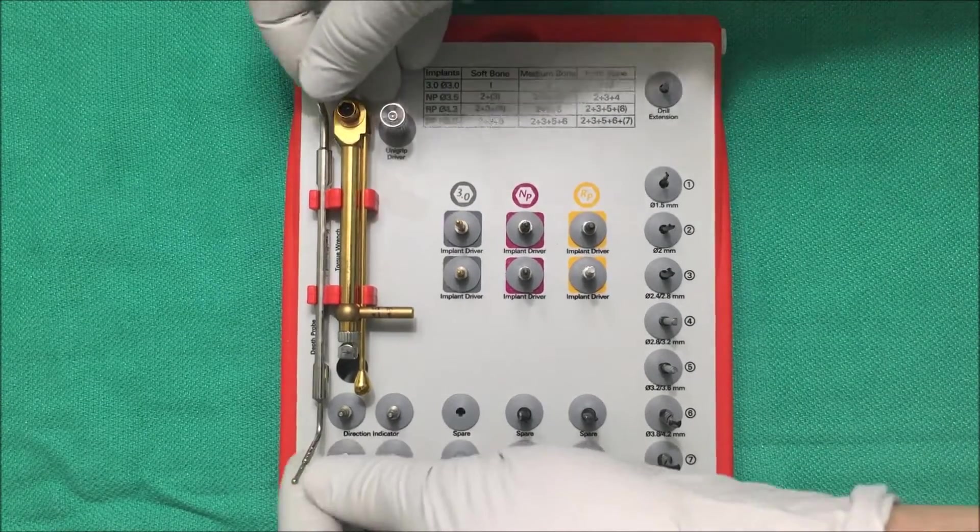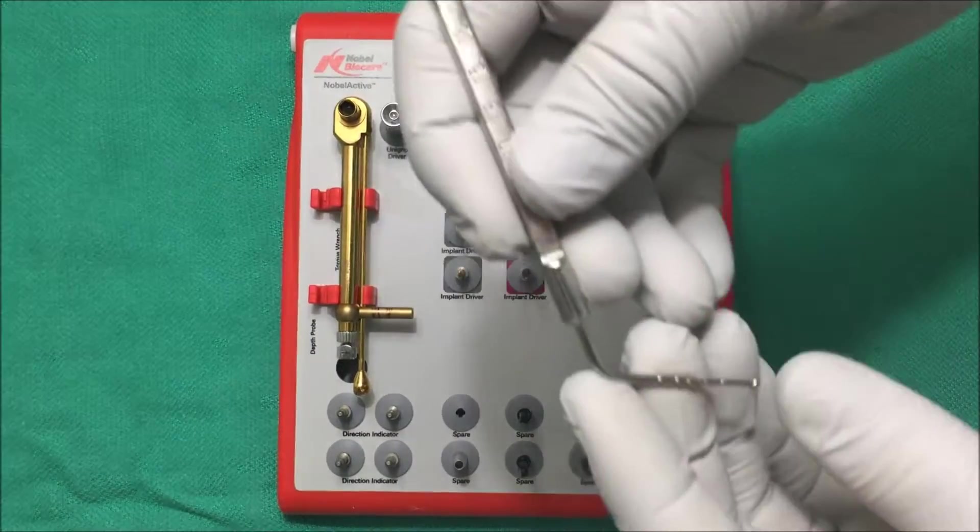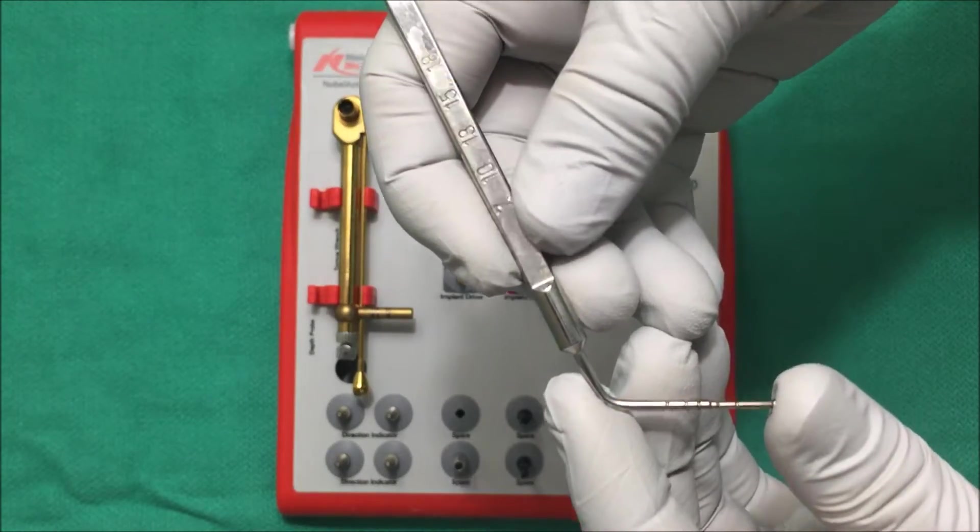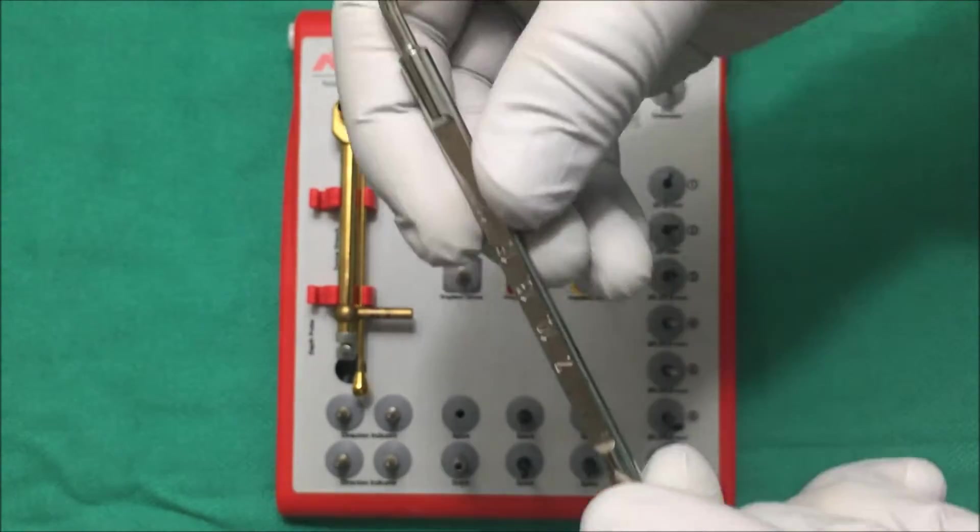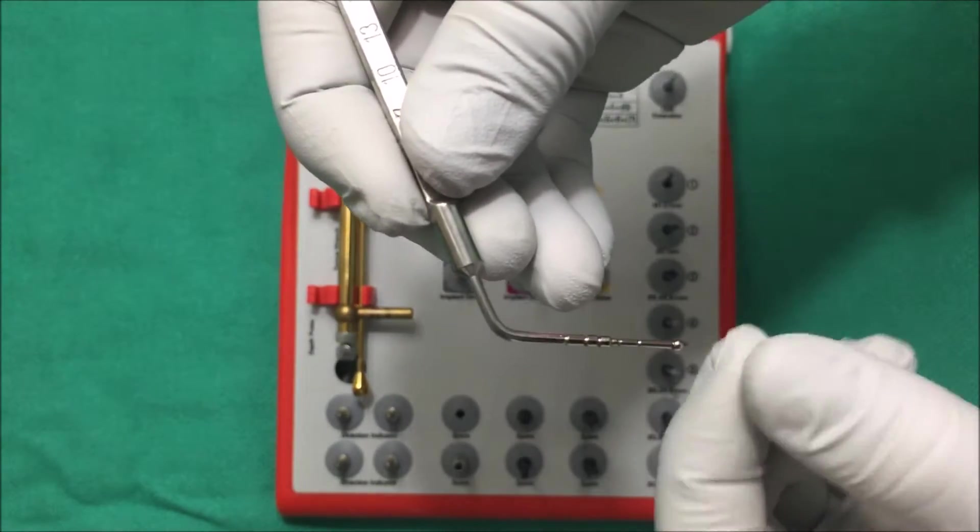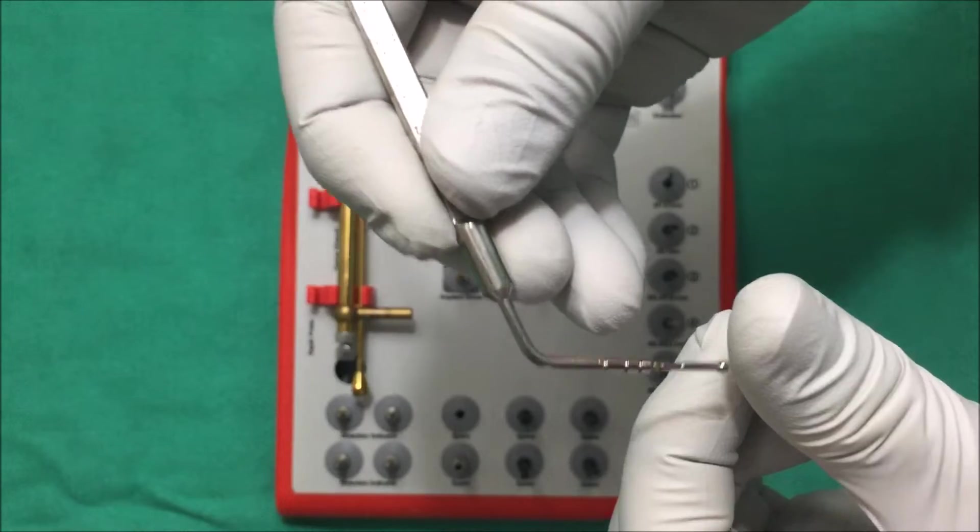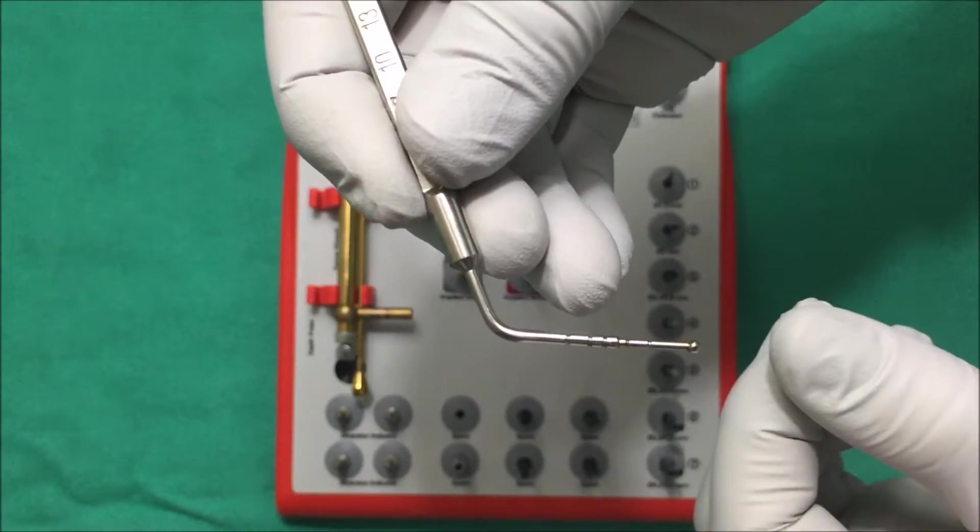So as you're preparing your osteotomy you can use this little device to measure how deep your osteotomy is. It's got some notches that correspond to different lengths here that are etched onto the side of the instrument. And also you can run this ball on the walls of the osteotomy to make sure that you have bone all around.